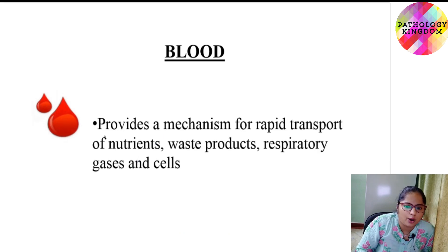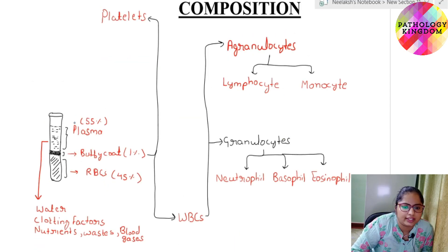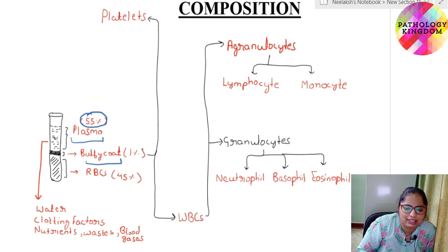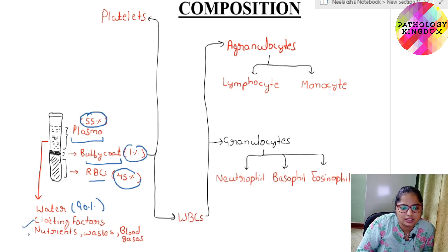Blood is a component which provides a mechanism for rapid transport of nutrients, waste products, respiratory gases, and various cells. When blood is subjected to centrifugation, it separates into three layers: the upper clear layer is plasma, constituting approximately 55%; the middle layer is buffy coat, constituting approximately 1%; and the lowermost layer is red blood cells, constituting 45%. Plasma consists of water (approximately 90%), clotting factors, nutrients, waste material, and blood gases.